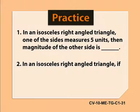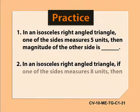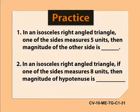Question 2. In an isosceles right angle triangle, if one of the sides measure 8 units, then magnitude of hypotenuse is blank.